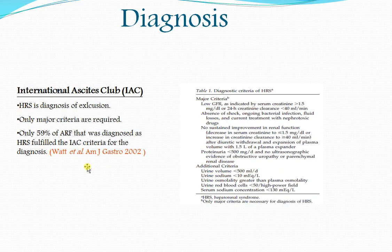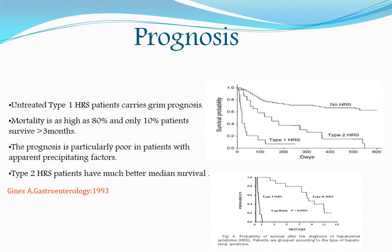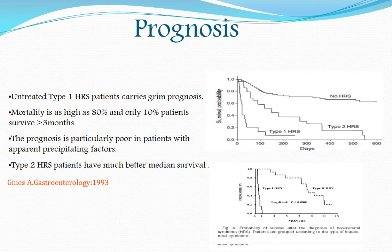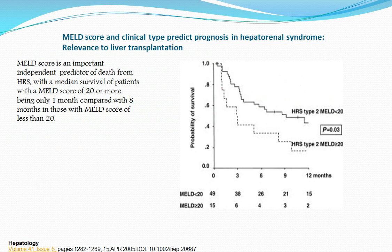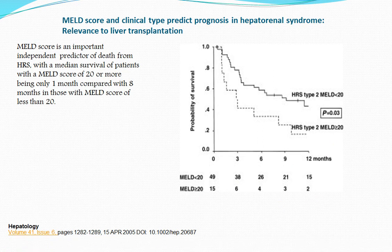Prognosis for Type 1 HRS is very poor — mortality is very high and survival is only about three months in 10% of patients, particularly in those with apparent precipitating factors. Type 2 patients have much better mean survival. The MELD score is an important predictor of prognosis. The magic number is 20: those with a MELD score over 20 had a median survival of only one month, compared to about eight months for those with a score under 20.